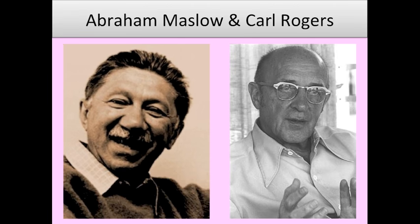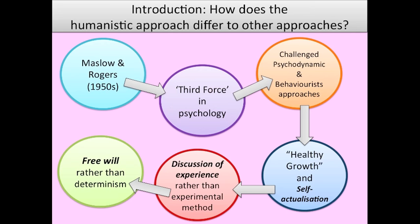The main psychologists you need to know about for the humanistic approach are Abraham Maslow and Carl Rogers. Humanistic psychology emerged in the 1950s and it soon became known as the third force in psychology alongside the psychodynamic and behaviourist approaches.